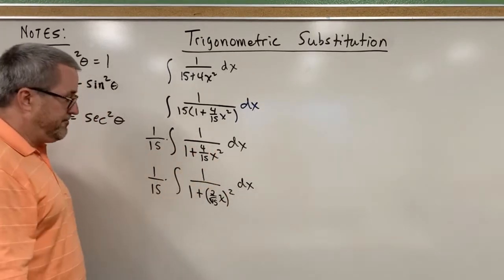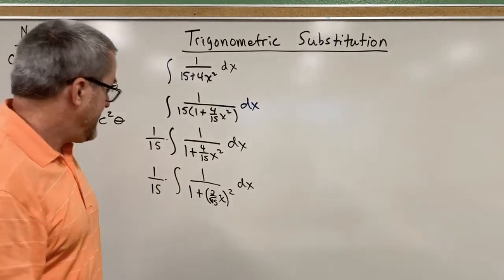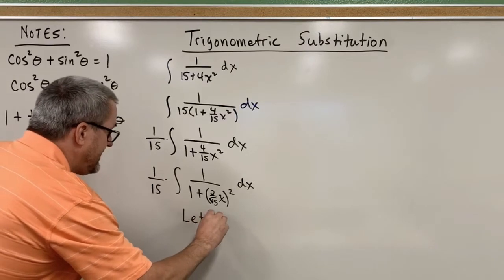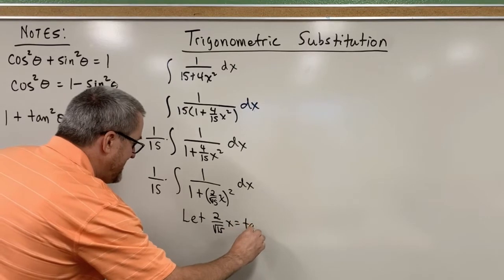x squared, x squared. Yeah, great. So we're going to make a deliberate, intentional move here. And a deliberate, intentional move is this. We're going to let 2 over the square root of 15 x be the tangent of theta.